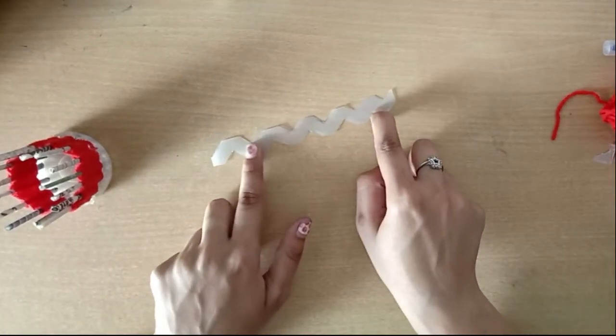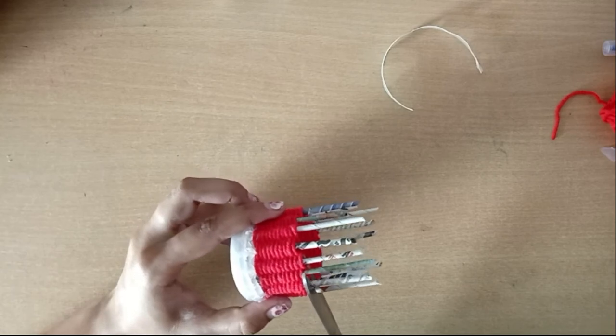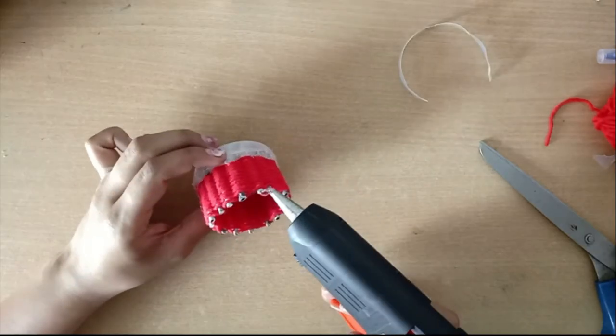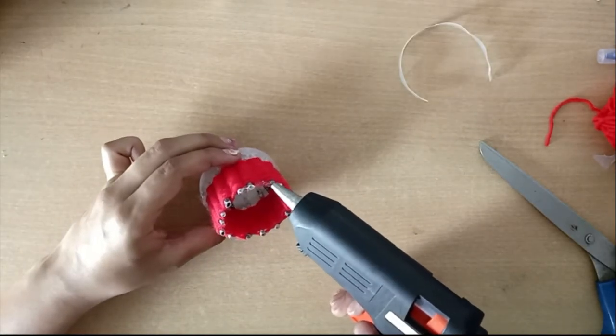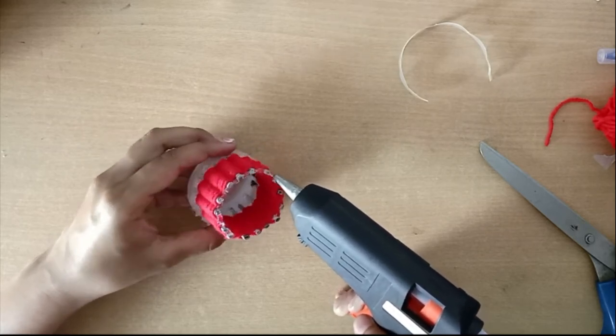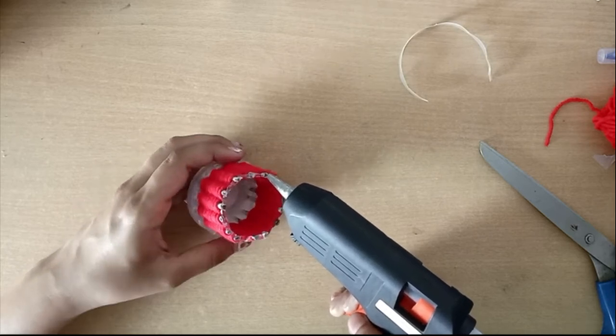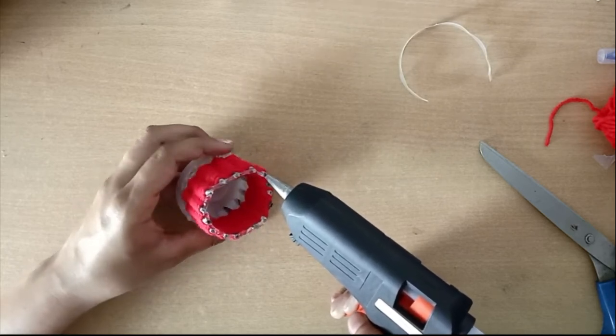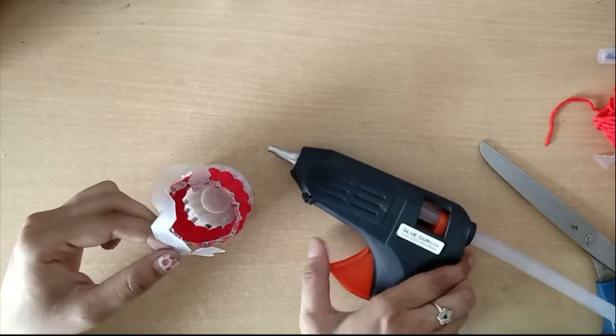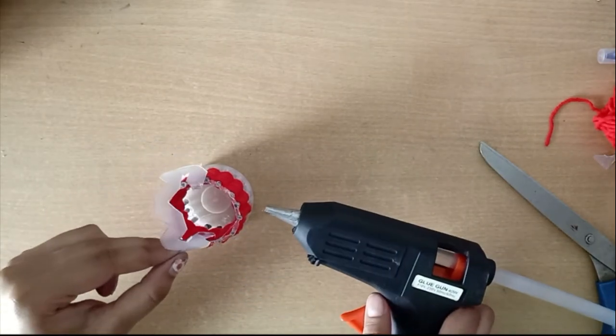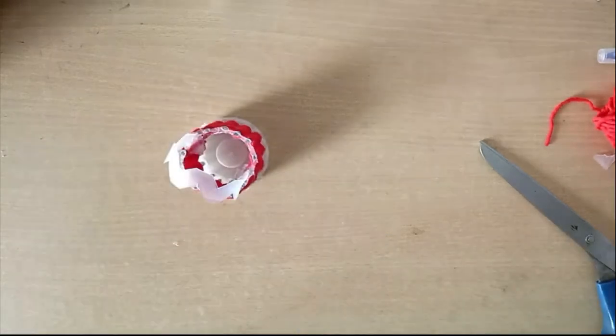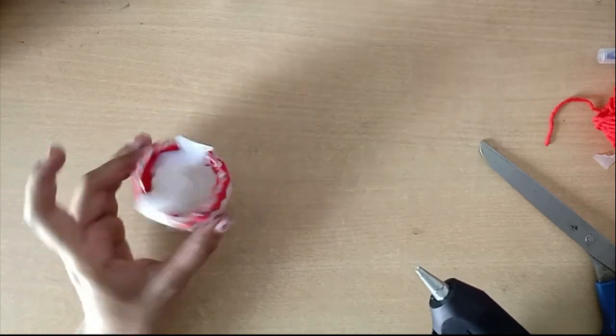Then we will see something like this. Now we will secure the edges of the basket. We will secure all the edges well. So the basic basket is made.